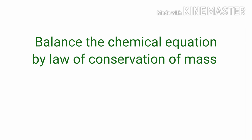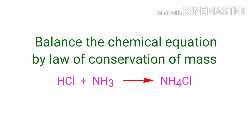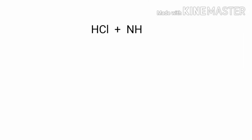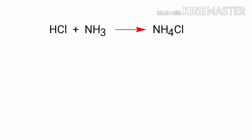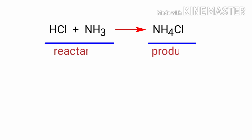Balancing Chemical Equations by the Law of Conservation of Mass. Hydrochloric Acid plus Ammonia gives us Ammonium Chloride. In this equation, the reactants are Hydrochloric Acid and Ammonia, and the product is Ammonium Chloride.